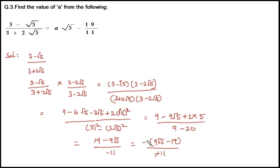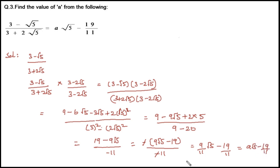Cancelling minus and minus, that equals (9/11)√5 − 19/11. This equals A√5 − 19/11. Comparing both sides, equating A to this coefficient, A = 9/11.